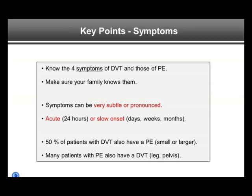The key points about symptoms that family members, patients, and the general public ought to know are the four symptoms of DVT and those of PE that we just discussed. If you have had a DVT or PE, make other family members and friends aware. Family members — typically parents, siblings, and children, the so-called first-degree relatives — are at increased risk for DVT and PE if you have had a clot. While the risk may not be very high, it is still somewhat increased.